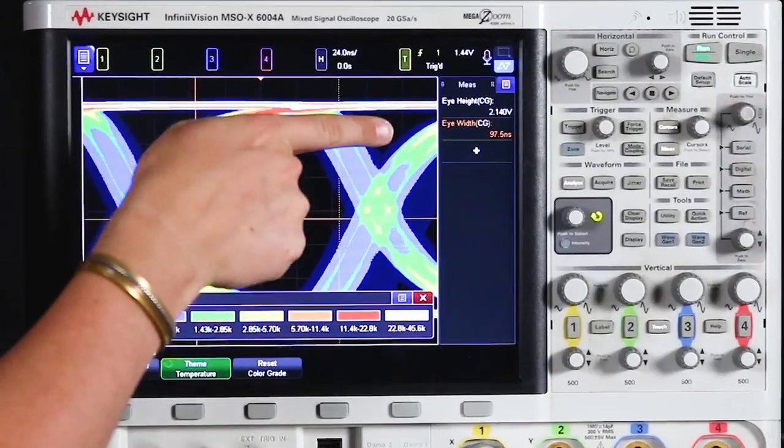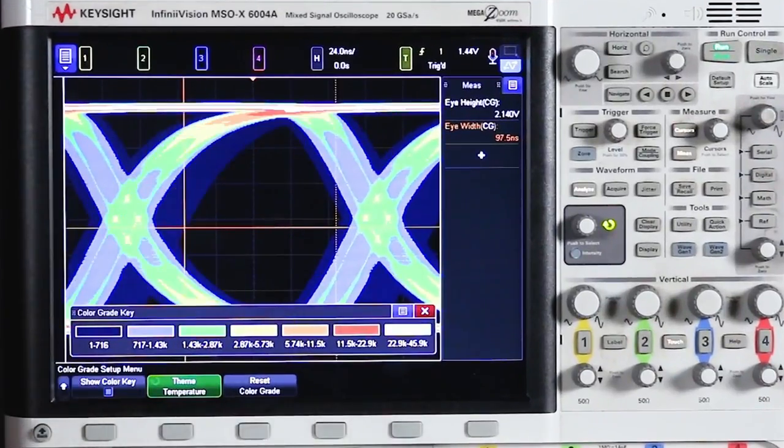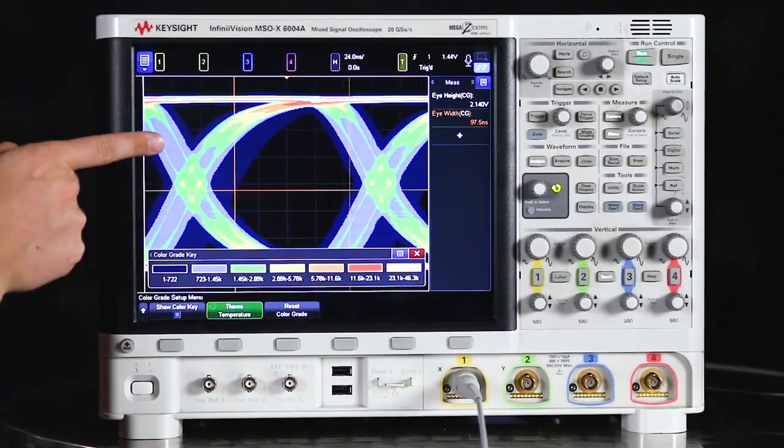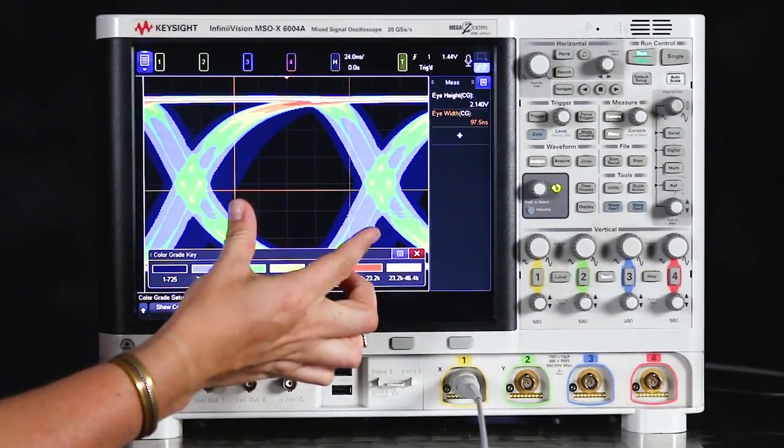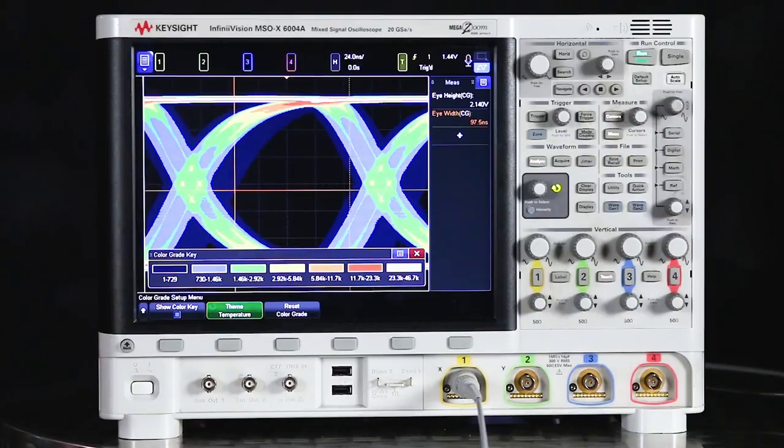Notice when we opened up the eye diagram we got two custom measurements that popped up in the sidebar, the eye height and the eye width. So this shows you the largest amplitude and the widest opening of the eye, and you can verify and compare that with your specifications for the signal and debug if you aren't seeing what you expected to.